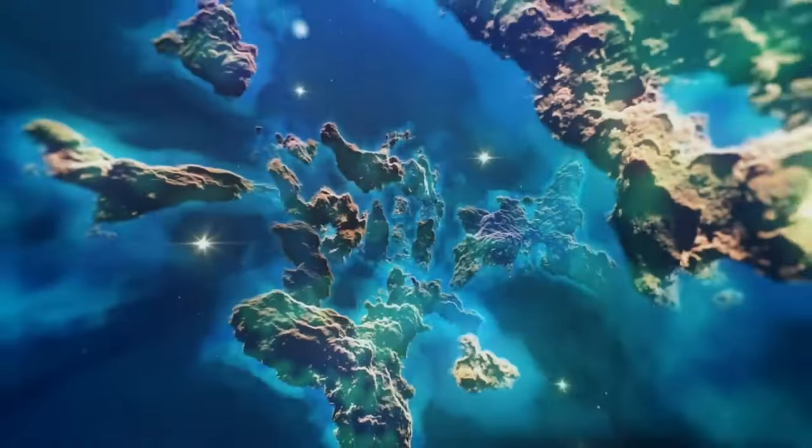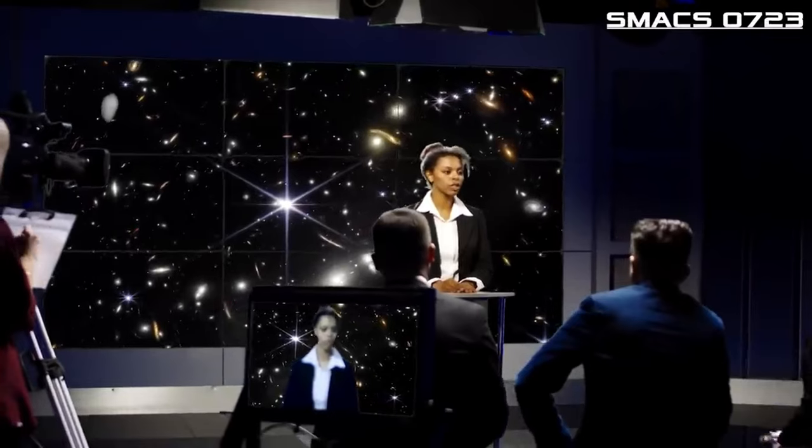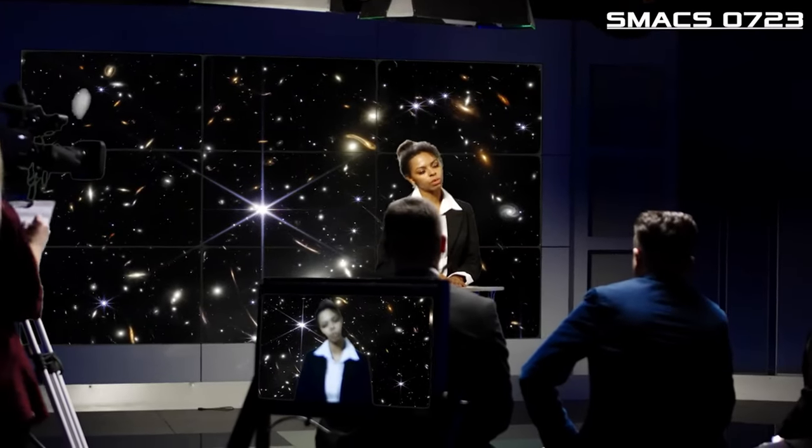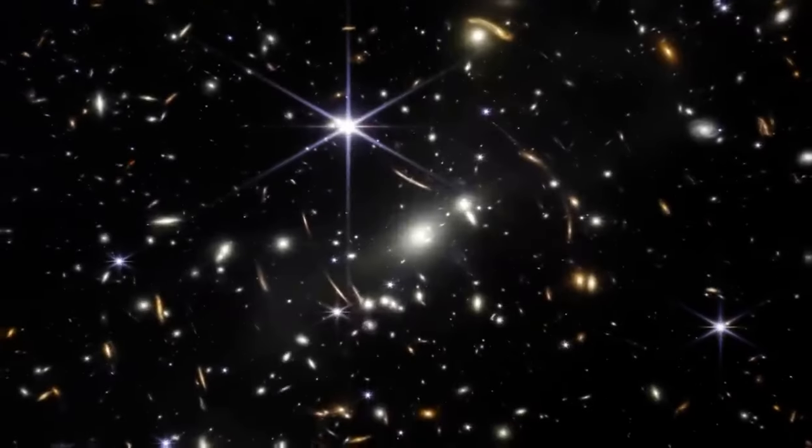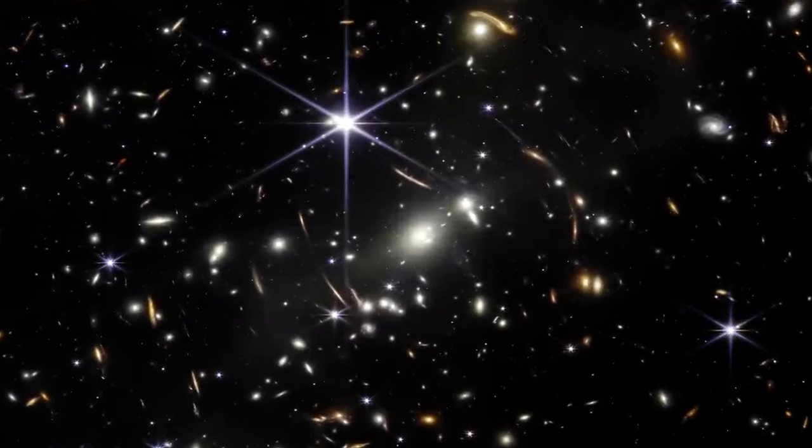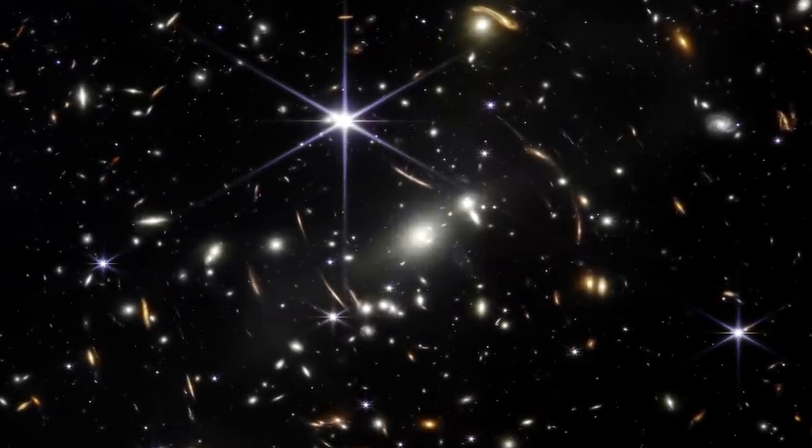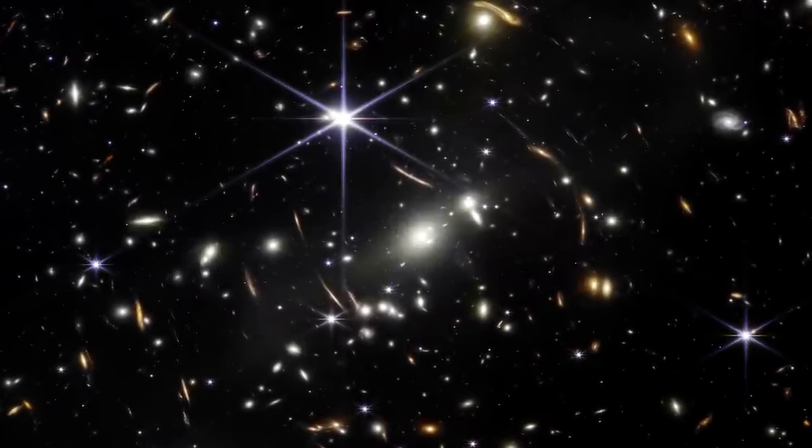The Webb Deep Field is the first demonstrated scientific photograph from the James Webb Telescope. The image was of the massive star cluster SMAX 0723. At first glance, this image is unremarkable. However, it is the one that reveals the full potential of Webb in a single image.